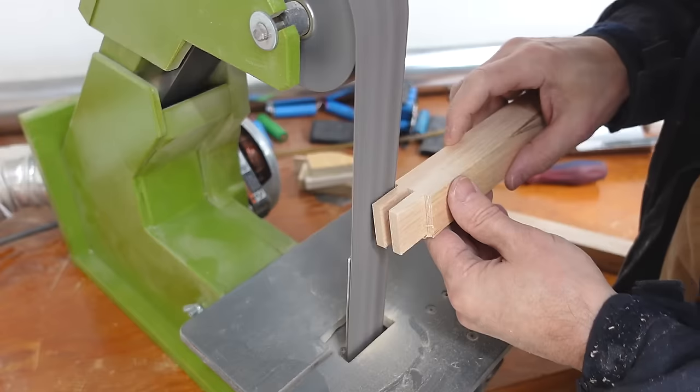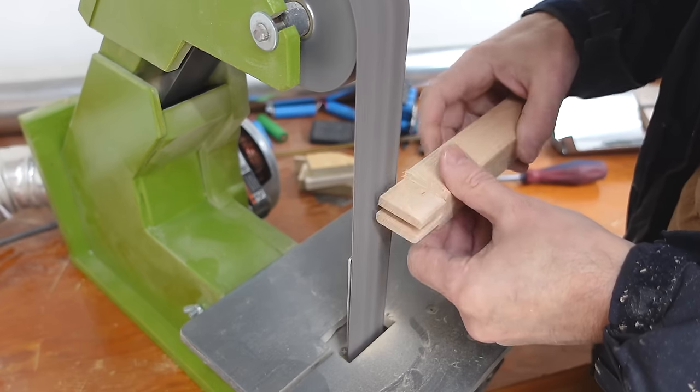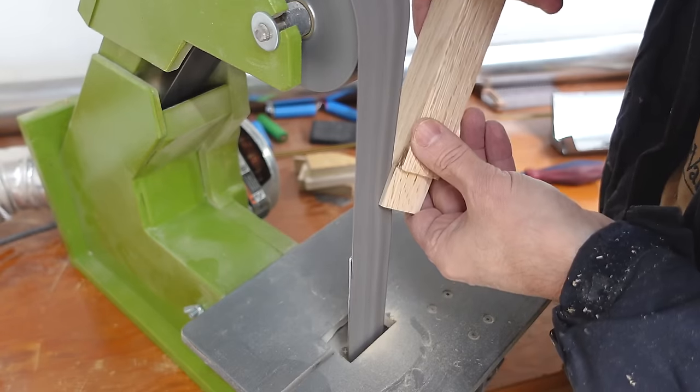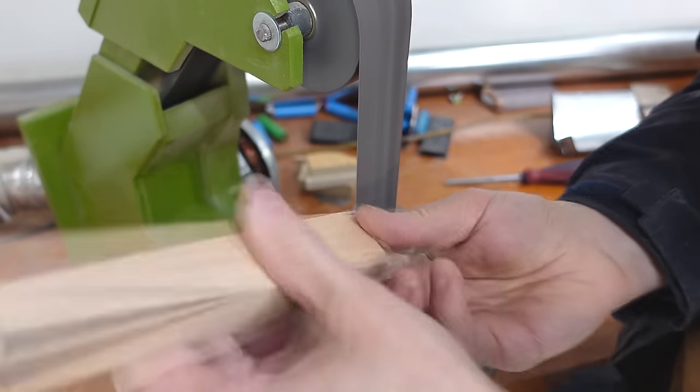A disadvantage of tenons that were not cut on the pantorouter is that the edges aren't rounded nicely for the mortise holes but here I'm trying to use the belt sander for this which works pretty good for the outside edges. The edges in between, not quite as well.